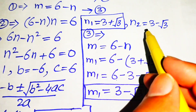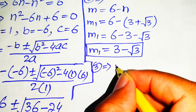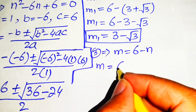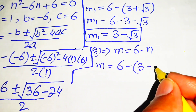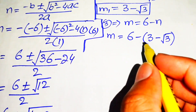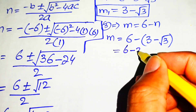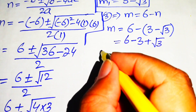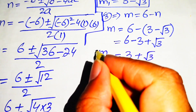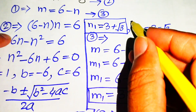For the second value, we substitute n2 into equation 3: m2 equals 6 minus (3 minus square root of 3). Distributing the negative sign gives 6 minus 3 plus square root of 3, so m2 equals 3 plus square root of 3.